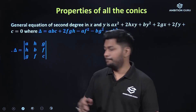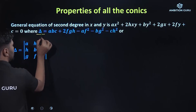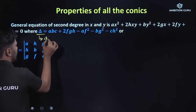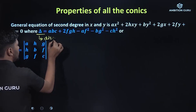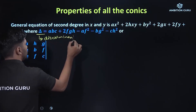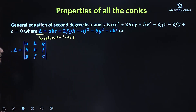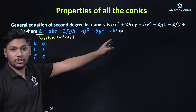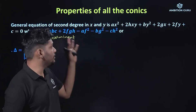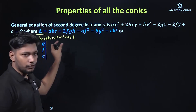In this equation, delta is the discriminant. Delta equals abc + 2fgh − af² − bg² − ch². We need to remember that. Delta is the discriminant of the general equation of second degree in x and y.